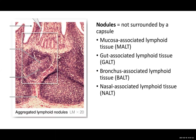What we are looking at right here is our lymph nodule. We can think of this as a collection of lymphocytes. The key thing is that it is not surrounded by a capsule, so it's not something that could be easily dissected and cut out from surrounding tissue. They've outlined it in white, but this particular area is what we are talking about when we say our lymph nodule.